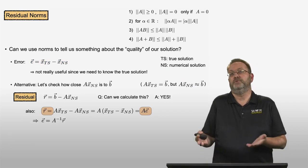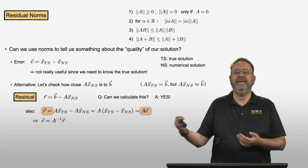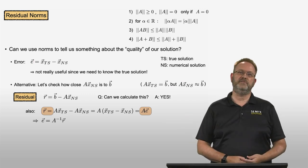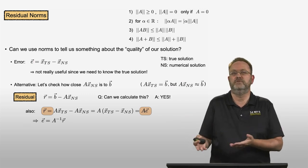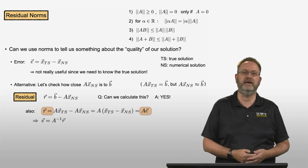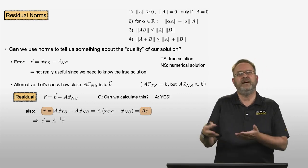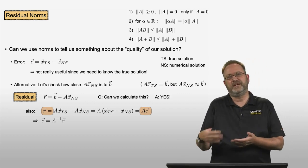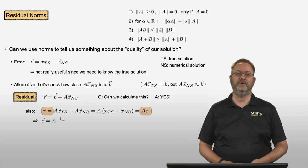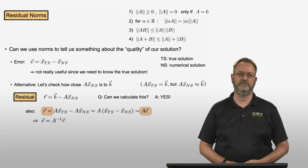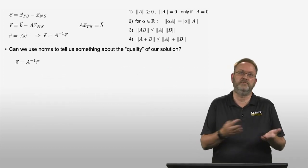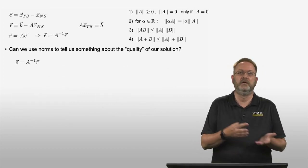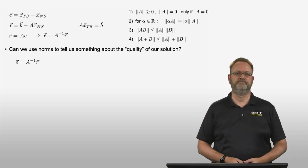This means that the error is equal to A inverse times R, the residual vector. So can't I use this to calculate what the error is? Not really, because that would require me to calculate A inverse, which in itself will have some errors. But this is a relationship between the error and the residual.